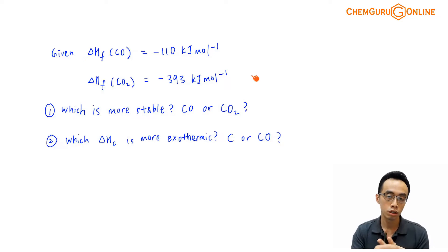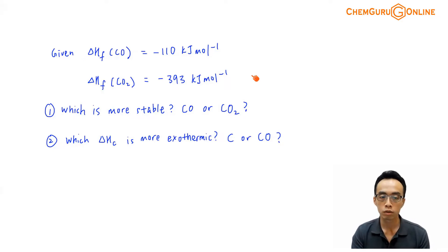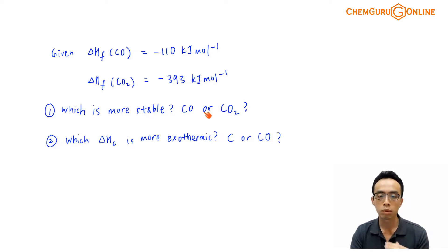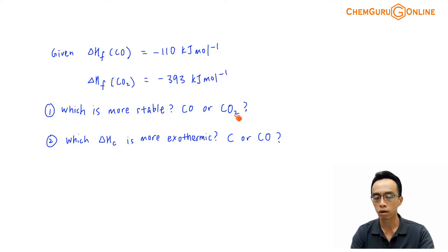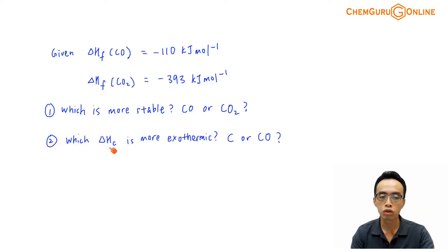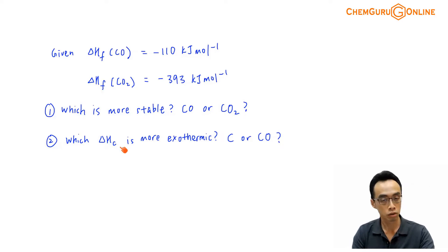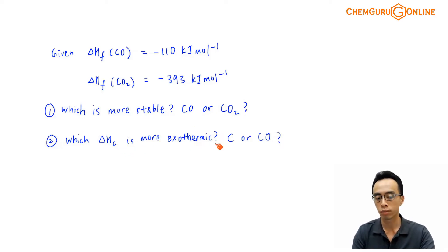So we have two things that we want to talk about. The first one is which is more stable, carbon monoxide or carbon dioxide. And the second thing we want to discuss is which enthalpy change of combustion is more exothermic.